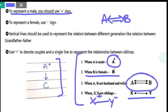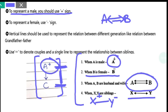Like here, the notation is that A is the father of C. C can also be male or female, so we will not put any sign on that.